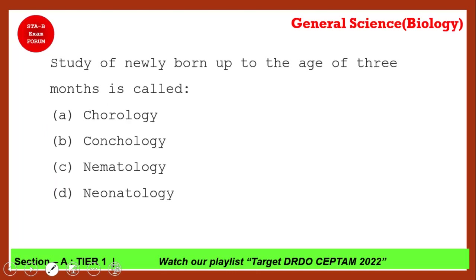This question has appeared in DRDO CEPTAM 9: the study of a newly born baby up to the age of three months is called what? The correct answer is option D — neonatology. You may have seen this department in hospitals as well.